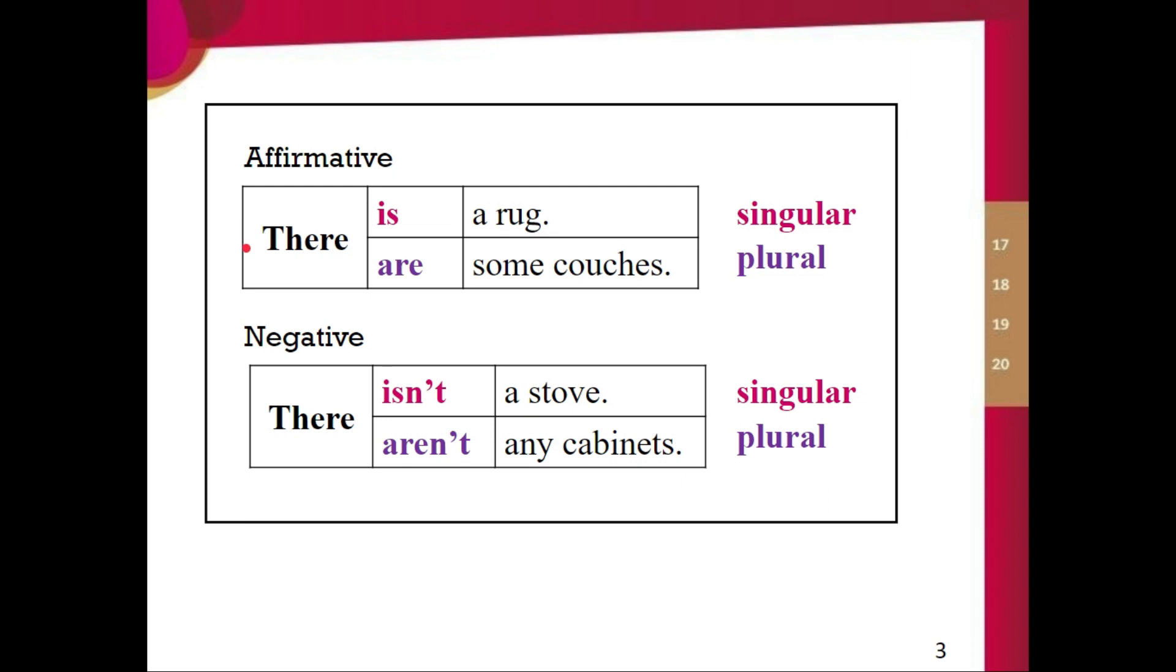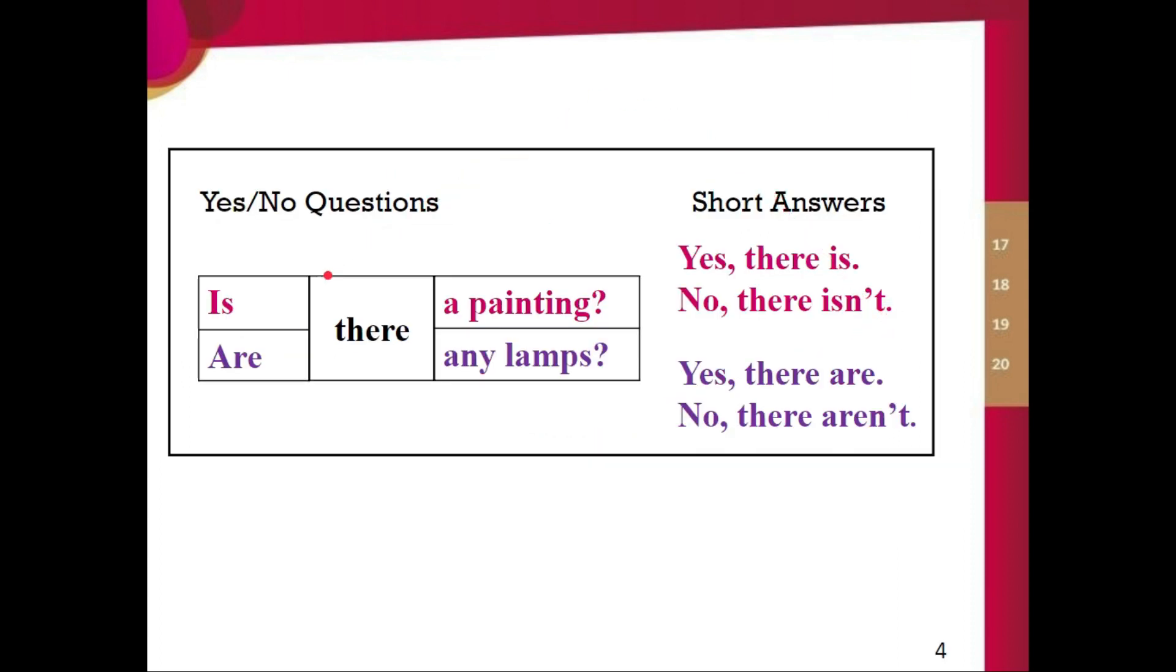This is the grammar. The affirmative. We say there is a rug. There are some couches. We can see singular and plural. In negative we have there isn't a stove. There aren't any cabinets. Again, singular and plural. Is is singular. Are is plural. In negative it's going to be isn't and aren't. Now for yes, no questions. We put to be verb at the beginning. And then there and then we have the object we're talking about. So is there a painting? Yes, there is. No, there isn't. Are there any lamps? Yes, there are. No, there aren't. So this is how you make yes, no questions.